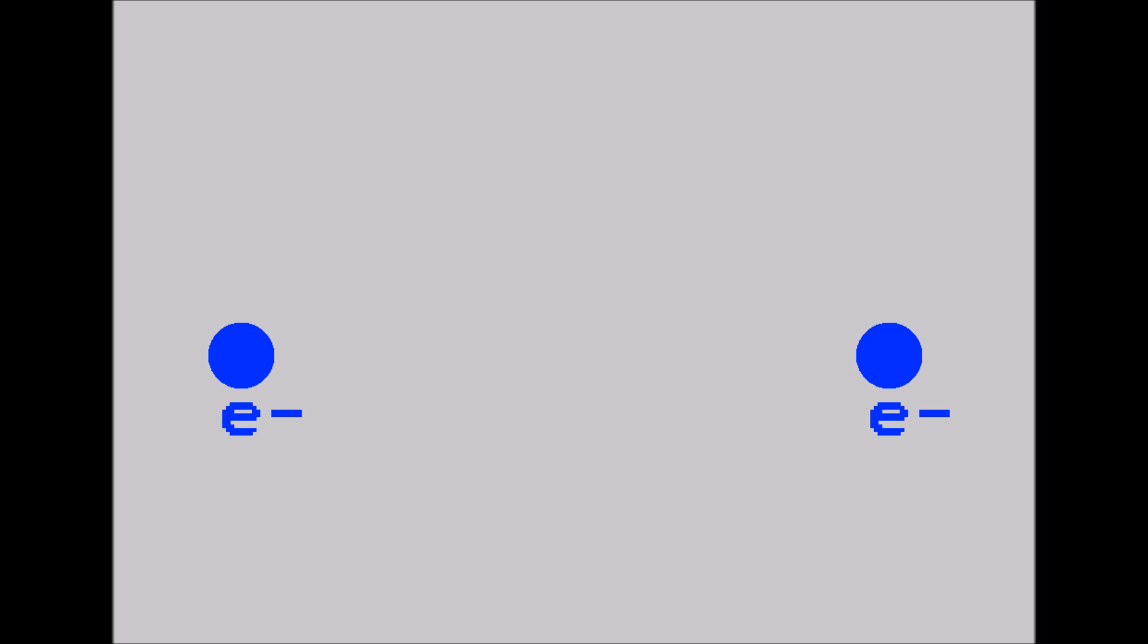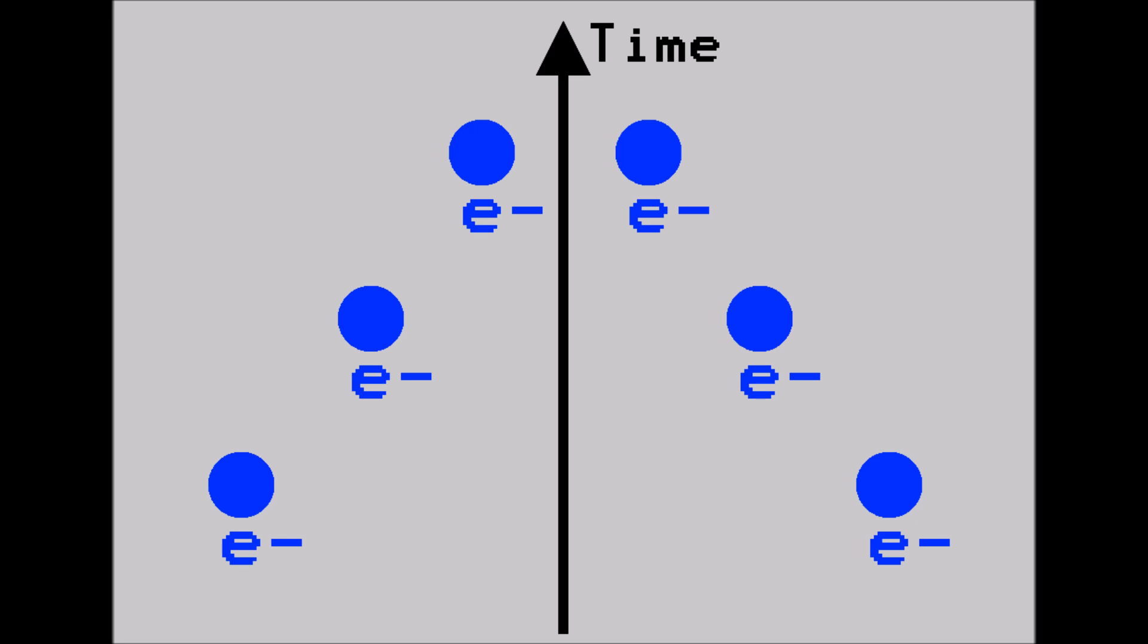Suppose we have two electrons travelling towards each other with some velocity v. This motion can be thought of as, as we go forwards through time, the two electrons move closer in space.